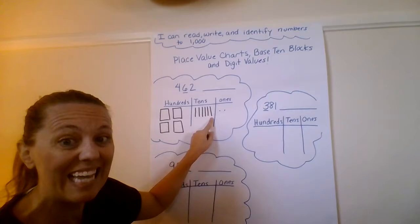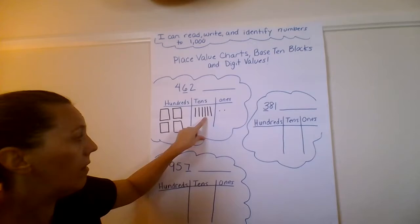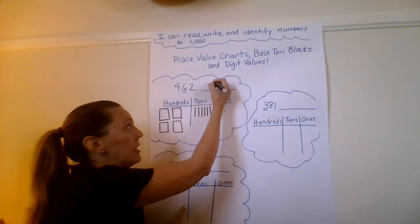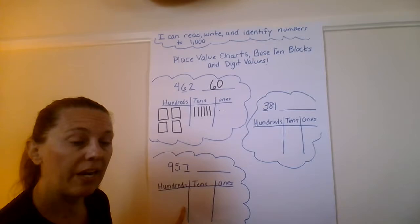One, two, three, four, five, six. I'm gonna count by tens to see how much that's worth. 10, 20, 30, 40, 50, 60. The value of that underlying digit is 60.